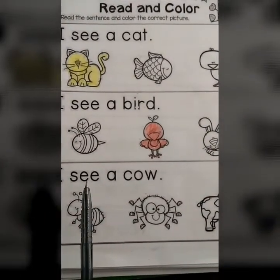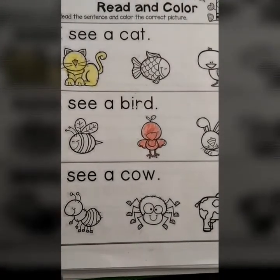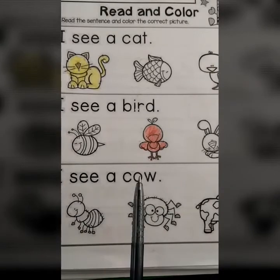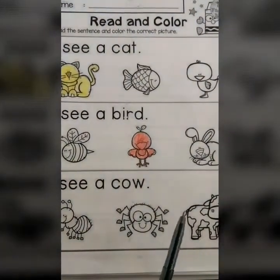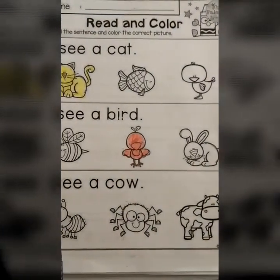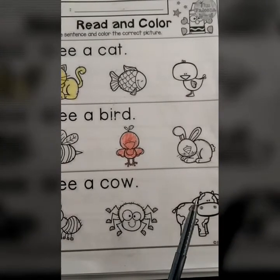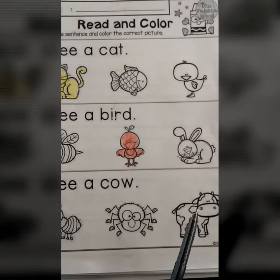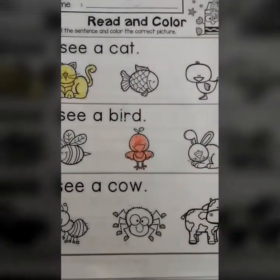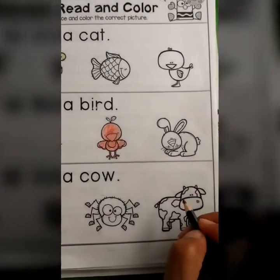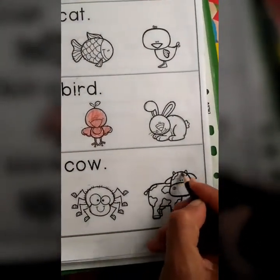I see a cow. So where is the cow here, children? Yes, that's it! This is a cow. I see a cow, so I'm going to color the cow.